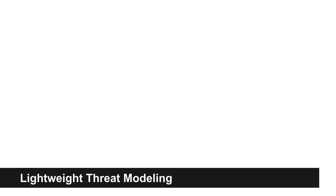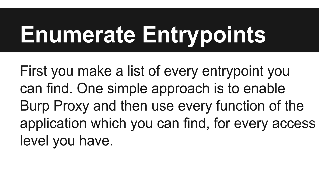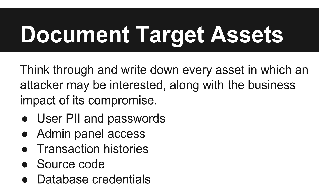Now let's talk about a lightweight approach to threat modeling. The first step is to make a list of every entry point you can find. One simple approach and my favorite is to enable Burp proxy and then use every single function of the application you can find for every access level that you have. Then you think through every asset in which an attacker might be interested, along with the business impact of its compromise.